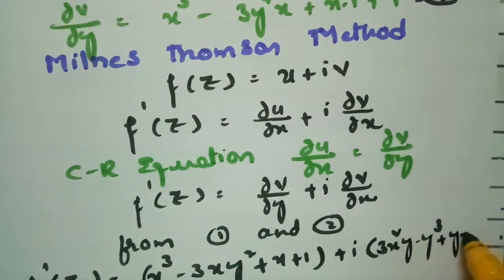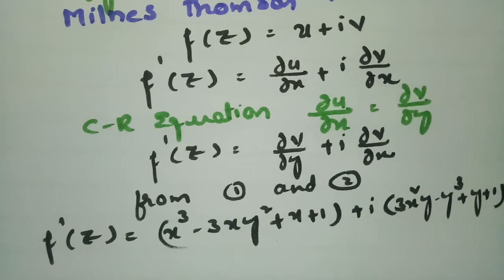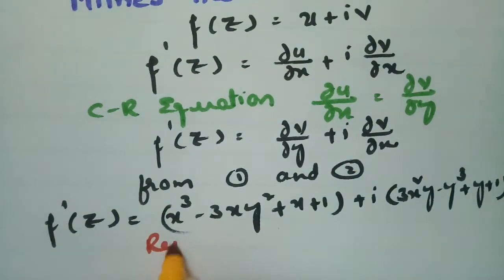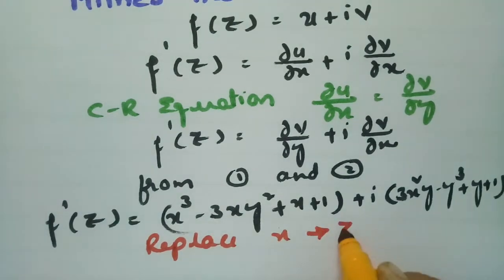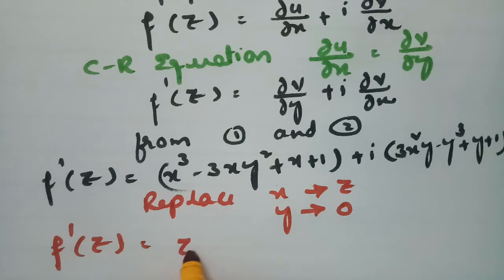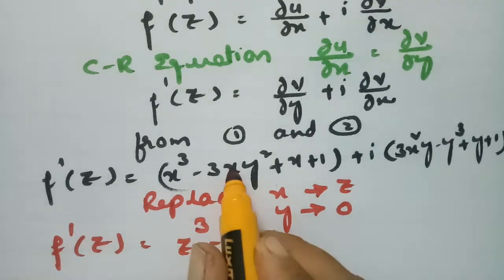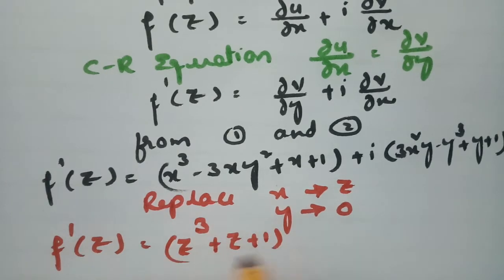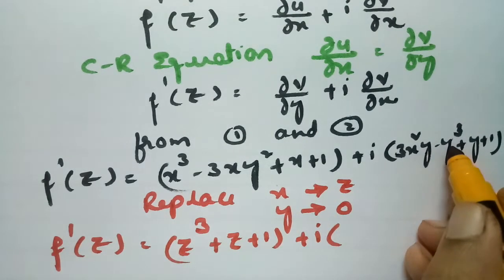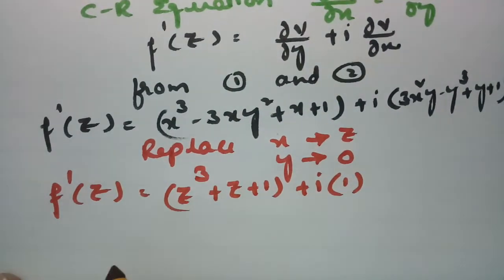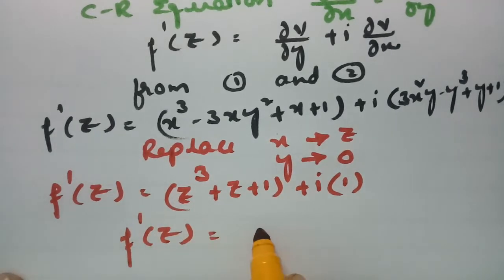When using the Milne-Thomson method, we have to replace x by z and y by 0. So if I do that, f′(z) equals — in place of x write z, in place of y write 0. The first bracket gives z³ + z + 1, and the imaginary part with y = 0 leaves only 1. So f′(z) = z³ + z + 1 + i.